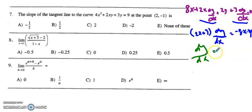Solving for dy/dx, I get negative 8x minus 2y, all divided by 2x plus 3, and now I'm going to have to sub in the given point.